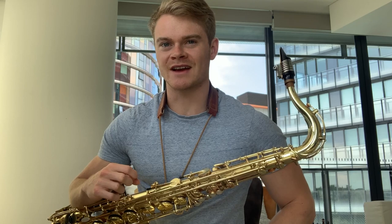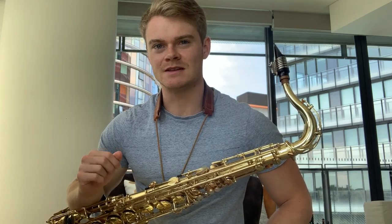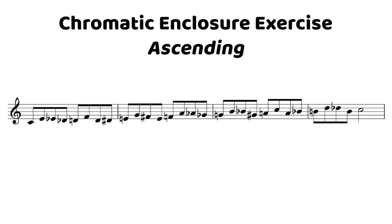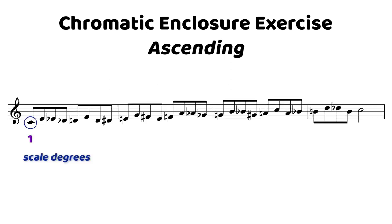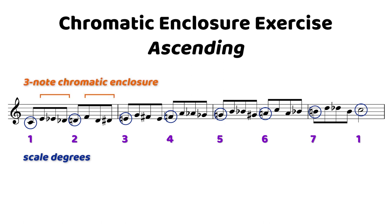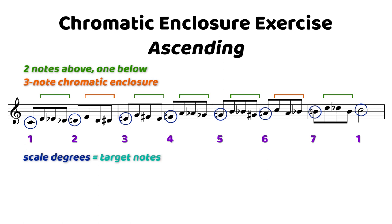Like our chromatic approach note exercise, we are going to be targeting each note of the C major scale. You can see that we have scale degrees on beats one and three — targeting on the downbeats. In between, you have three-note chromatic enclosures. Most of the time we have two notes above, one note below, and then the target note. Just like our chromatic approach note exercise, when we have only a half step between scale degrees, we're having to change up the pattern. This is a really great way you can apply chromatic enclosures through a scale with an exercise like this.